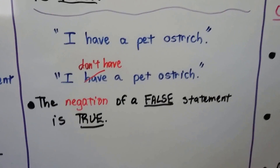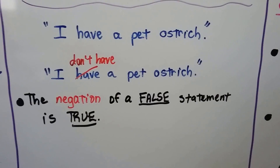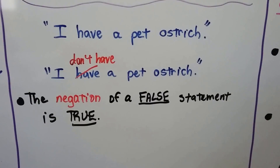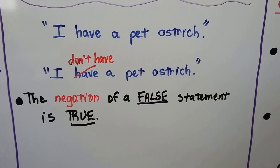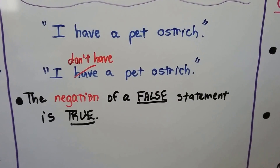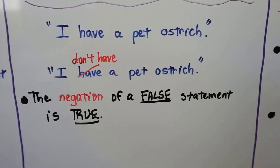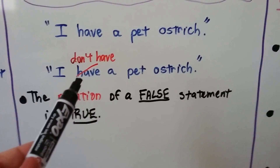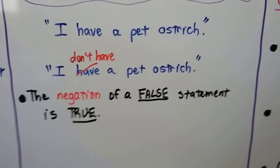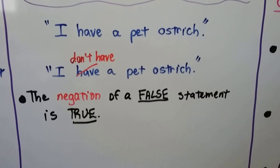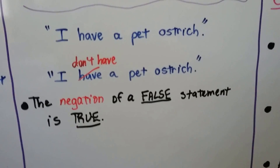Here's a false statement: I have a pet ostrich. I don't really have a pet ostrich — that's false. My yard is way too small, and I wouldn't even know how to take care of an ostrich. We can negate this and say I don't have a pet ostrich. The negation of a false statement is true — it's true, I don't have a pet ostrich.